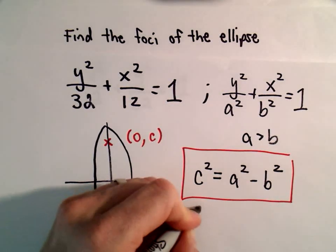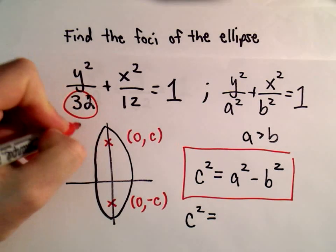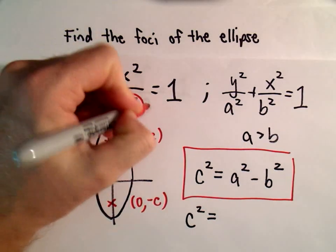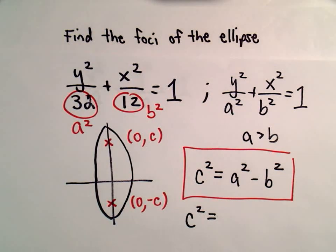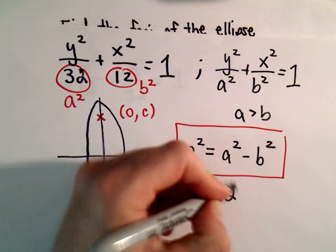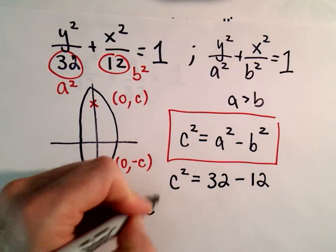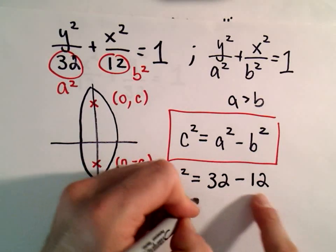Now it's just a matter of solving. a² is going to be our value of 32, and 12 is going to be the value for b². So we'll have 32 as a² minus 12 for b², which gives us c² = 20.